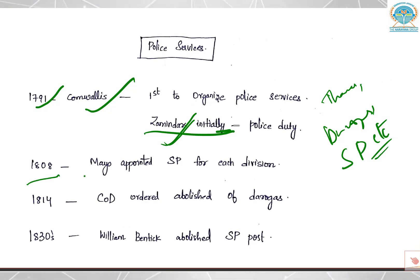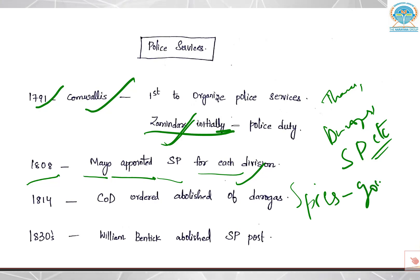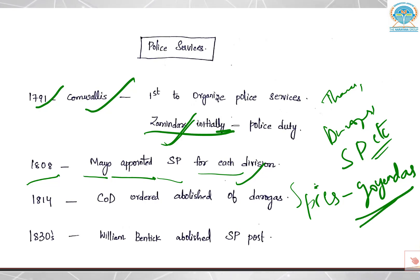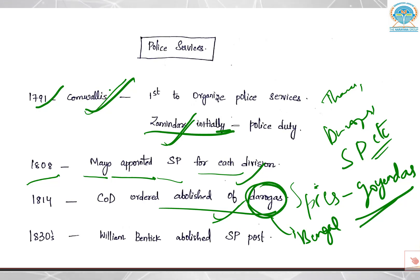In 1808, Lord Mayo, who was the Governor General at that time, appointed Superintendents of Police for each division and also appointed spies. The spies who give secret information are also called Goindas. But this system was a failure. Later in 1814, the Court of Directors ordered the abolition of Darugas in all places except Bengal — the position that Cornwallis had established from 1791.